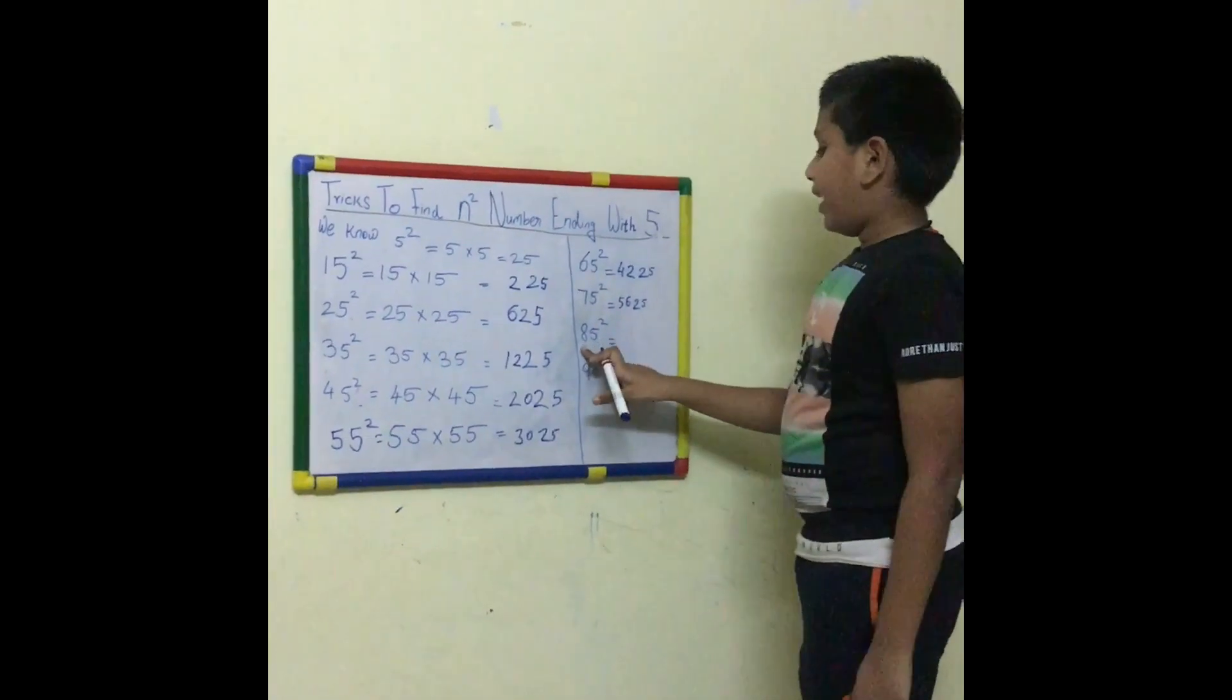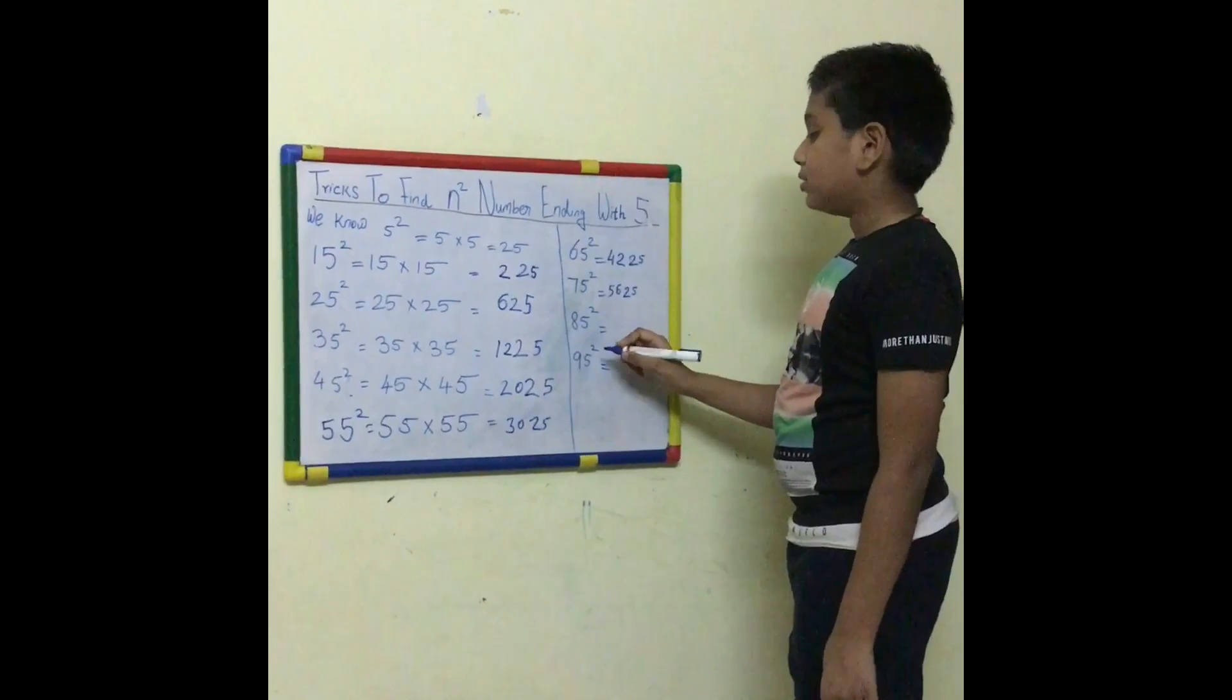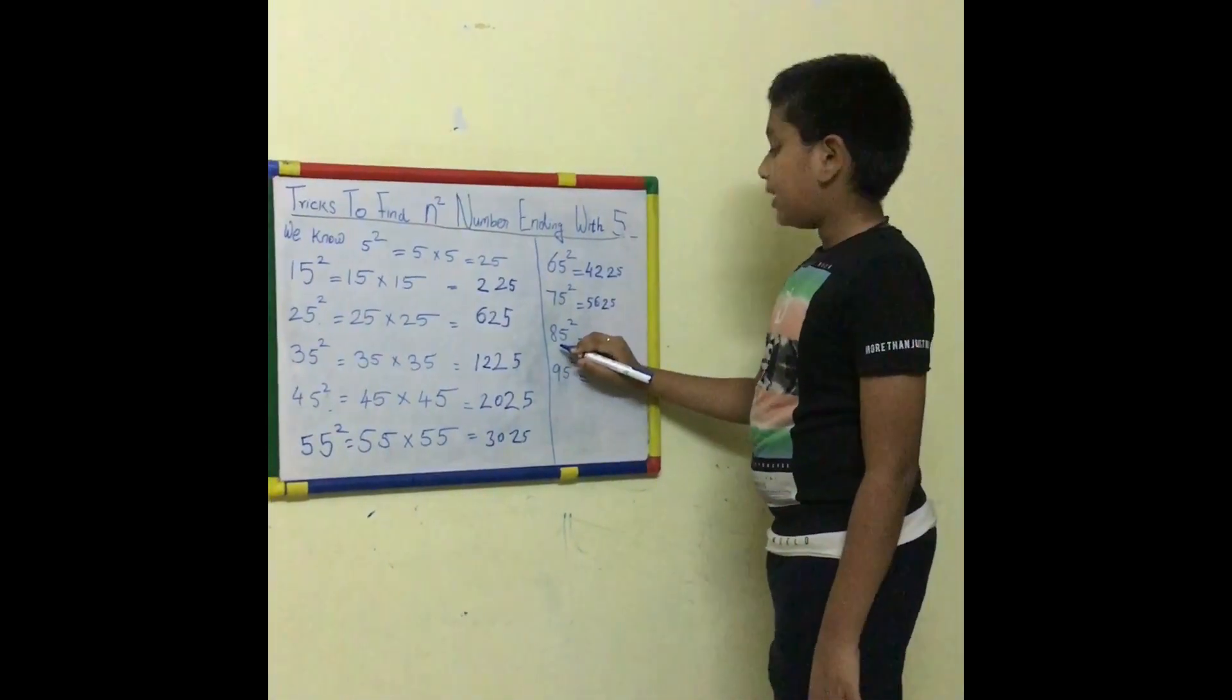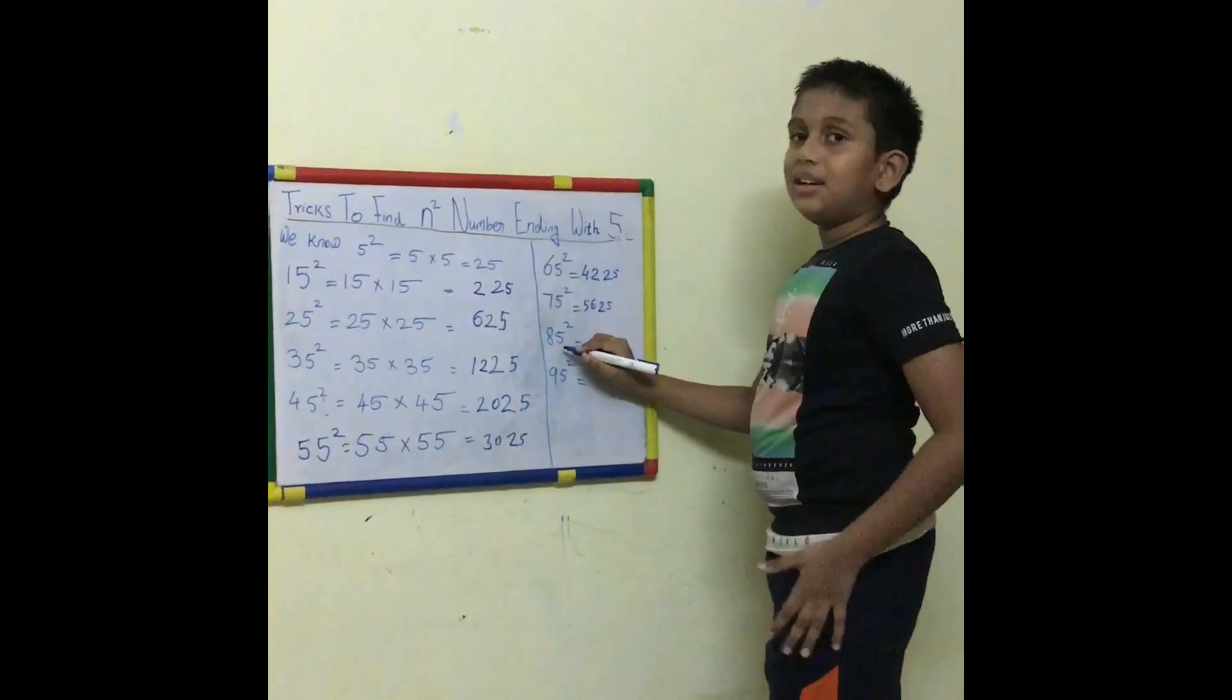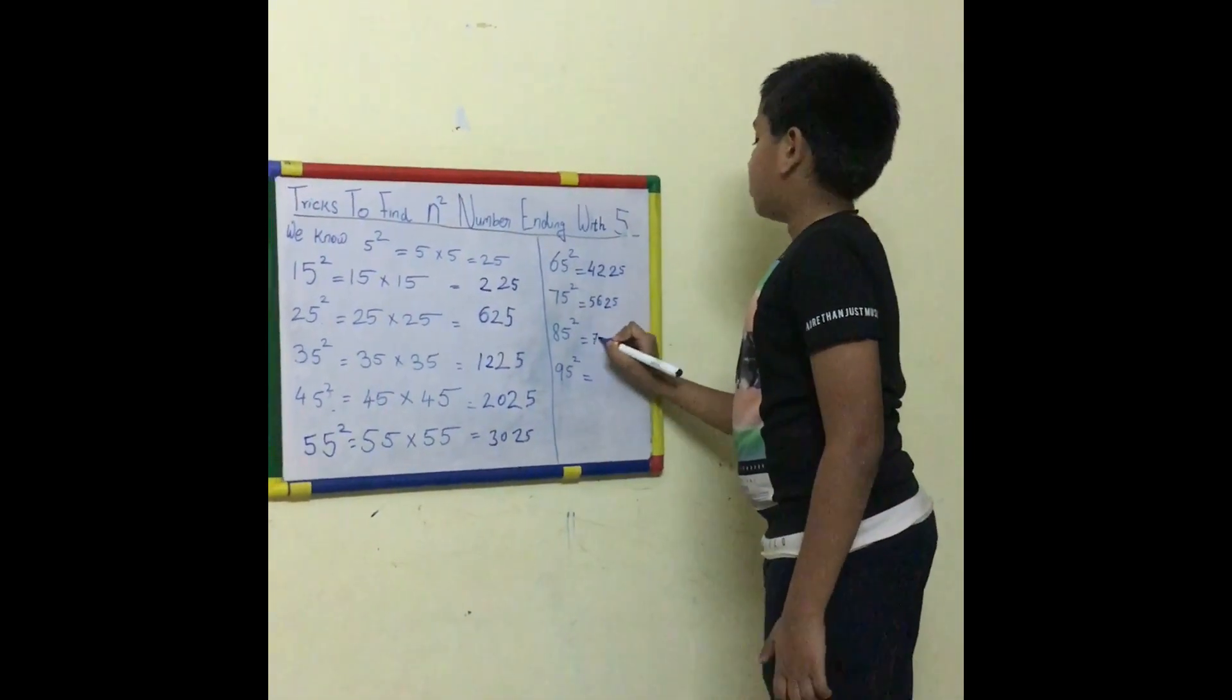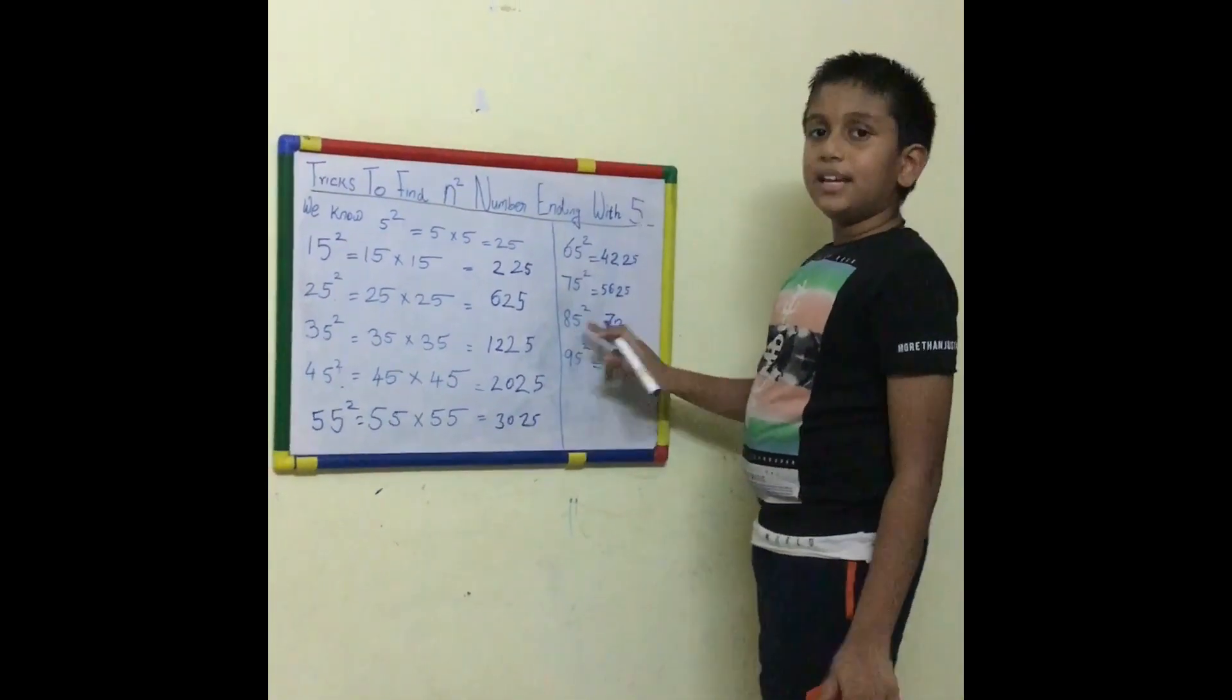Then 85 squared. 8's successor is 9. So 8 into 9 is 72. So 5 into 5 is 25. The answer is 7225.